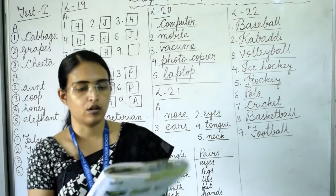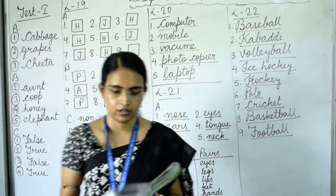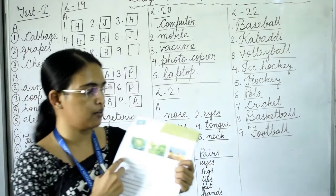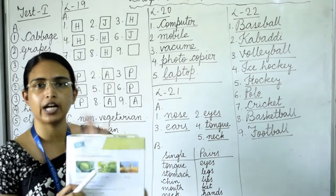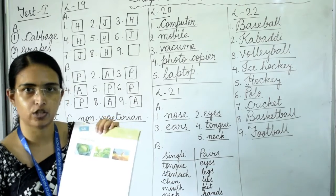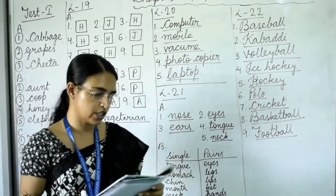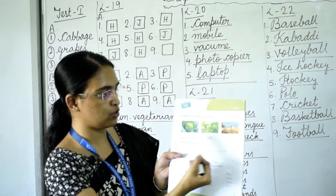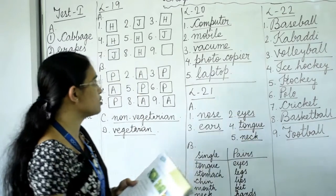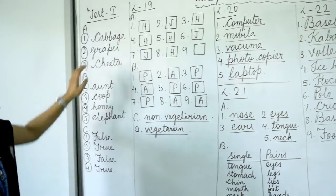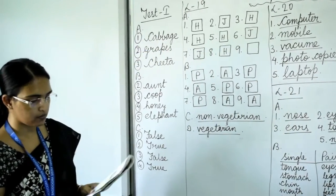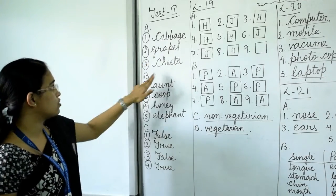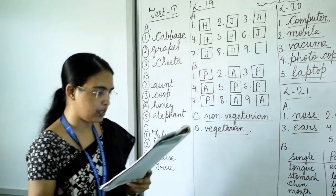Now come to page number 23 — Test 1, which is the revision page. Question A: identify the following pictures and write their names. Number one is cabbage, number two is grapes, number three is cheetah. Question B: fill in the blanks. Question B1 — our class teacher's name — we will do this when school opens.